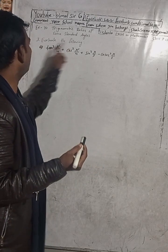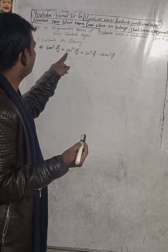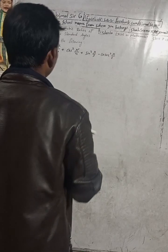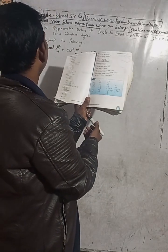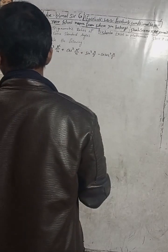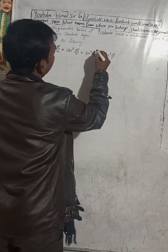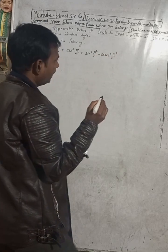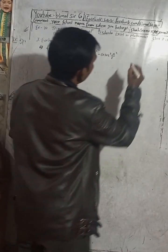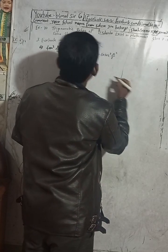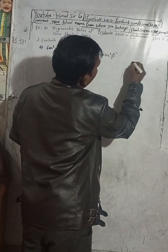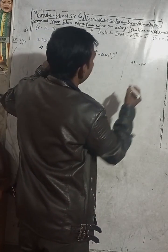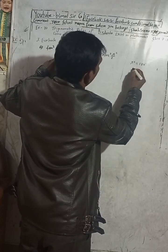Question 3, evaluate the following. Part (a): tan²(π/4) + cos²(π/4) + sin²(π/3). Now, the radian is not given in the book but this is pi radian. I will explain the key concept here. Pi radian is equal to 180 degrees.